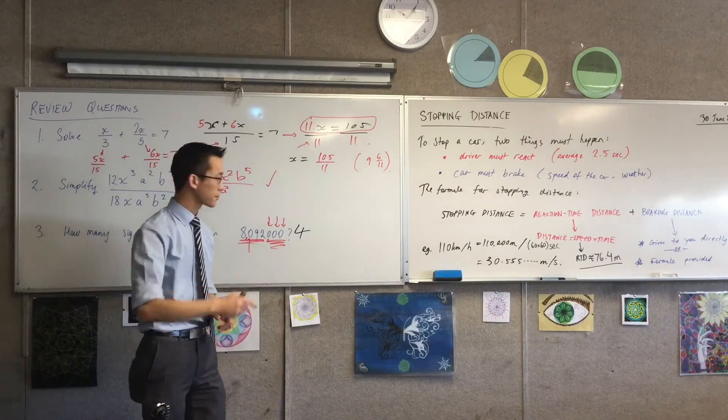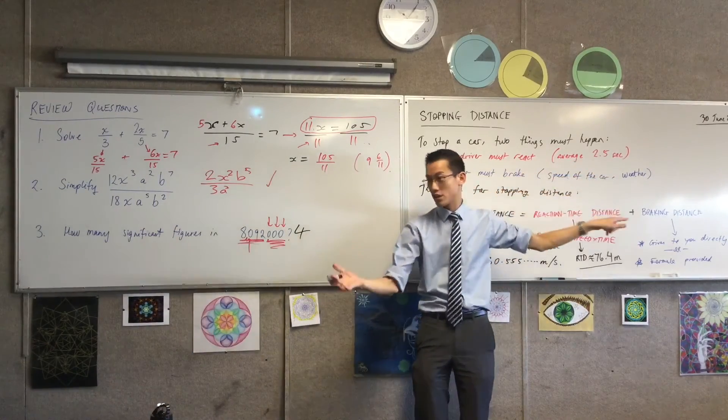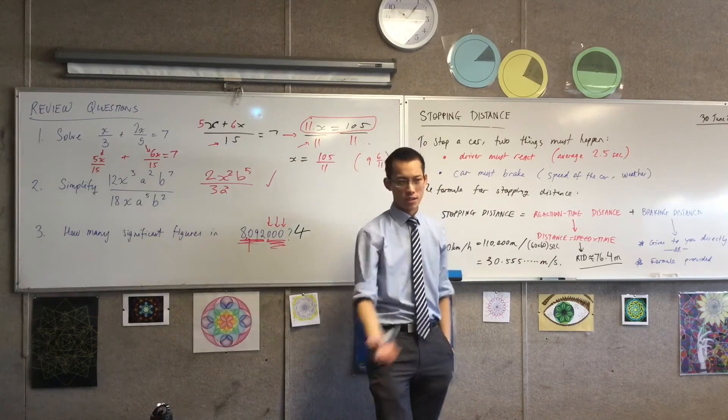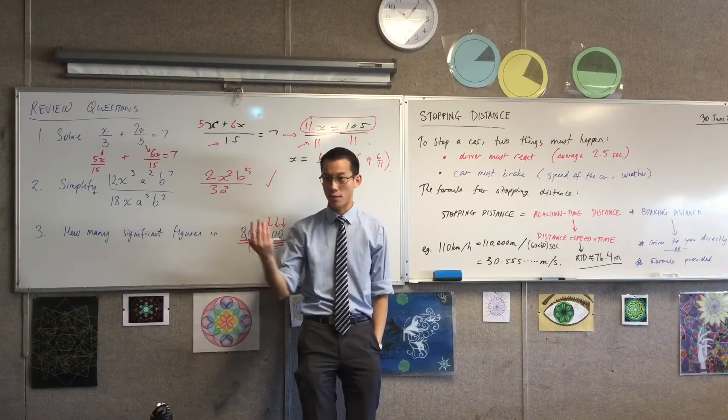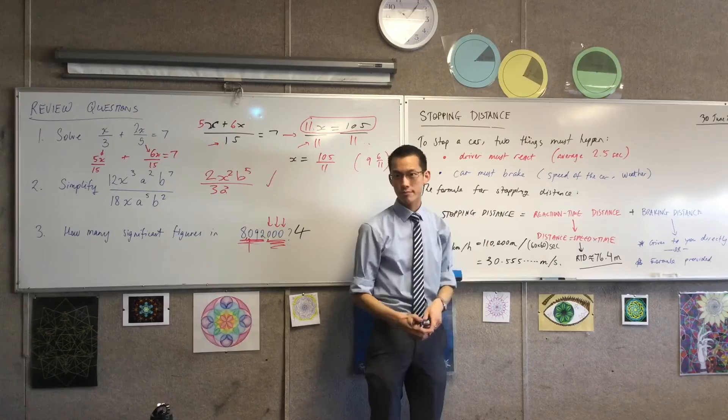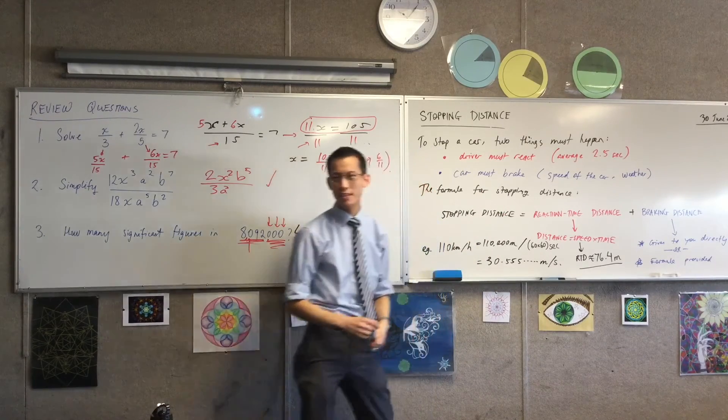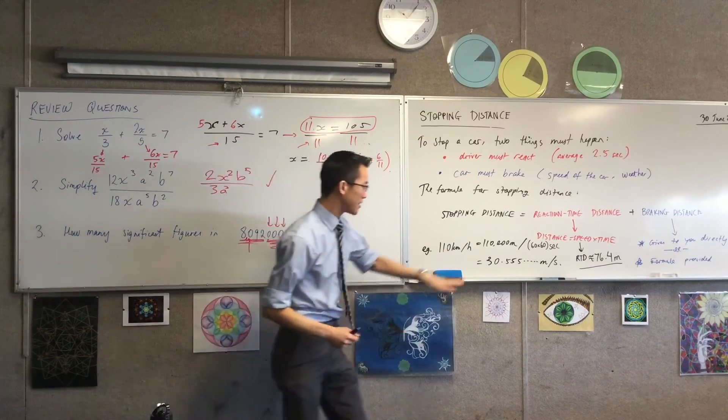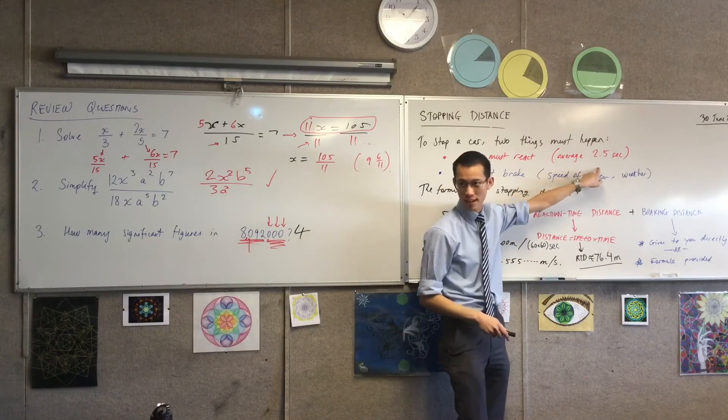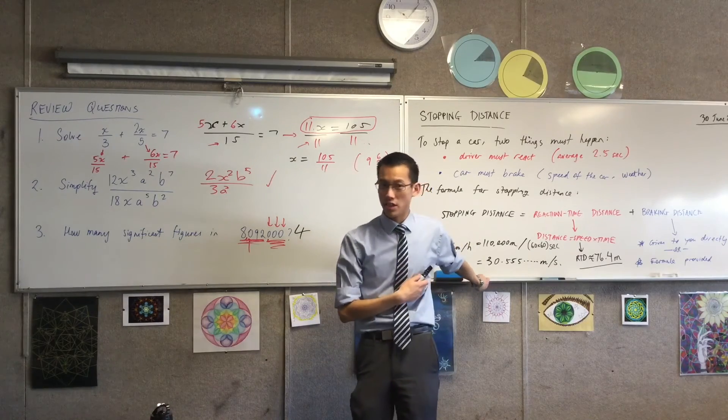So I'm taking the number times by 2.5. Correct. So I've multiplied it, and I should say, this is the average, but occasionally a question will say to you, you know, so-and-so is driving and she has a reaction time of two seconds, or so-and-so is driving and he has a reaction time of three seconds. So just read the question carefully. How did you get 76? I said this is how far I travel every second, but I travel for two and a half seconds, so I've multiplied this by 2.5.